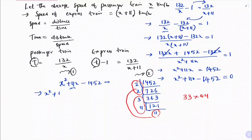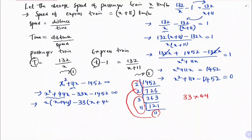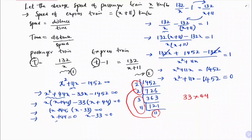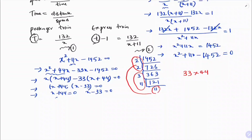So: x squared plus 44x minus 33x minus 1452 equals 0. Taking x common from the first two terms: x(x plus 44) minus 33(x plus 44) equals 0, giving (x plus 44)(x minus 33) equals 0. Therefore x plus 44 equals 0 or x minus 33 equals 0, so x equals minus 44 or x equals 33.